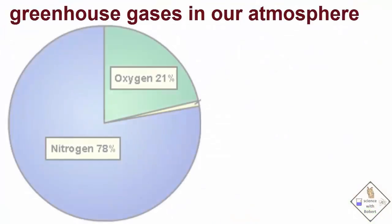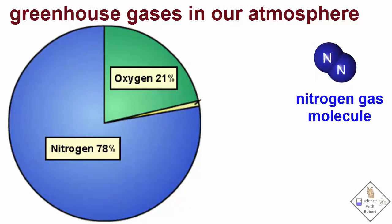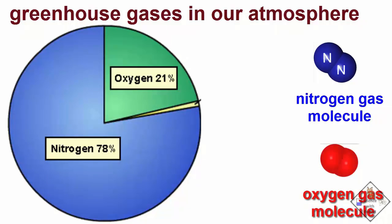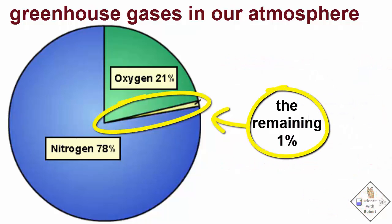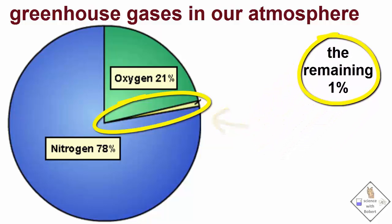A greenhouse is similar to how our atmosphere works. Our atmosphere is 78% nitrogen and 21% oxygen. What is strange is neither of these gases can block heat. Heat passes right through them. So that means the remaining 1% of our atmospheric gases must be doing all the work when it comes to blocking heat like a pinball machine. In fact, these remaining gases are terrific at blocking heat.